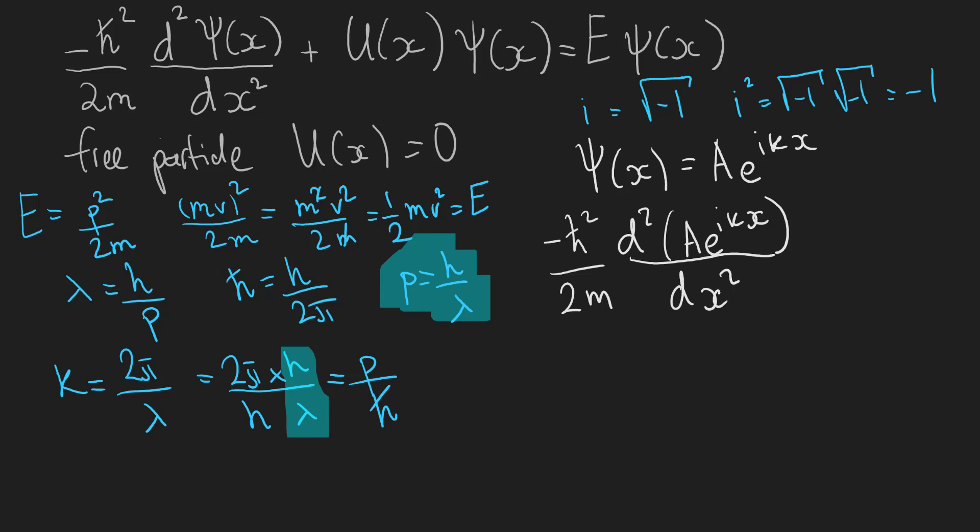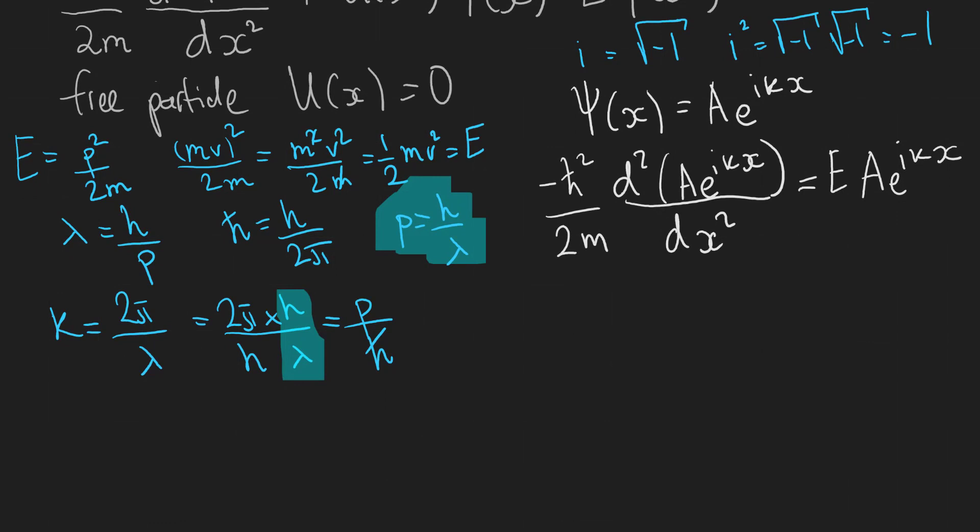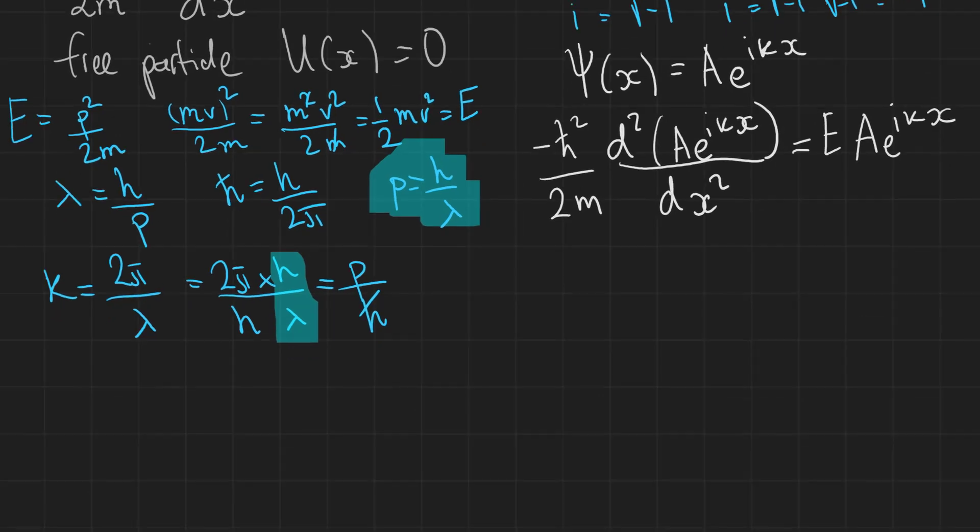Plus zero, which I'm not going to write, is of course equal to the energy times A e^(ikx). Now all we need to do really is just differentiate this function using the chain rule. If you don't remember the chain rule, I have a separate video on that. I'll link this into the description. So the second derivative of this function is just the same function multiplied by a factor of i^2 times a factor of k^2.